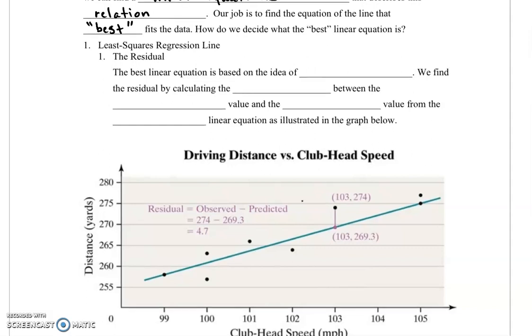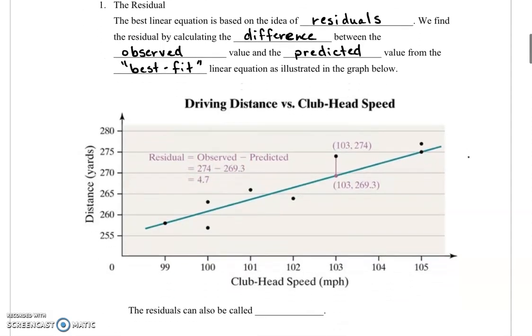The best linear equation is based on the idea of something called residuals. We find the residual by calculating the difference between the observed value and the predicted value, which comes from the best fit linear equation. They've illustrated this idea in the graph below.